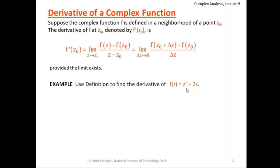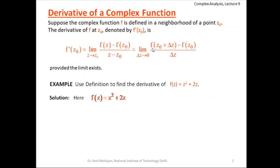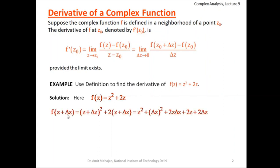For example, we'll use the definition to find the derivative of the function z² + 2z. Here the function f(z) = z² + 2z. We'll use this definition, but instead of at a fixed point, we'll calculate the derivative at a general point z. Let us calculate what f(z + Δz) is: if there is a change Δz, then f(z + Δz) = (z + Δz)² + 2(z + Δz).